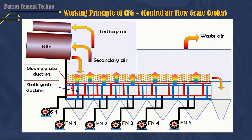Working principle of CFG or Control Air Flow Grate cooler: cooling air flows through the channel from the cooling fan, which is divided into two — stationary and moving channels. Then the air is channeled through the beam grate plate. Meanwhile, the air sealing under the grate plate uses a separate cooling fan, improving the distribution of air in the channel that connects the rows of grate plates directly.